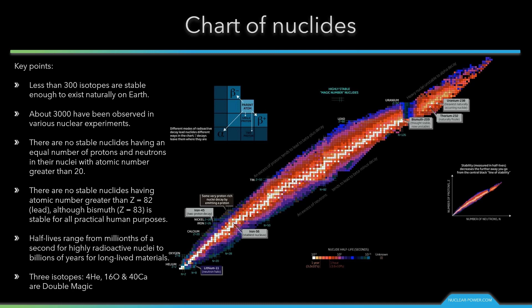Although bismuth with 83 is stable for all practical human purposes. Half-lives of unstable nuclei range from millionths of a second for highly radioactive nuclei to billions of years for long-lived materials. Helium-4, oxygen-16, and calcium-40 are so-called double magic and are found to be particularly stable.